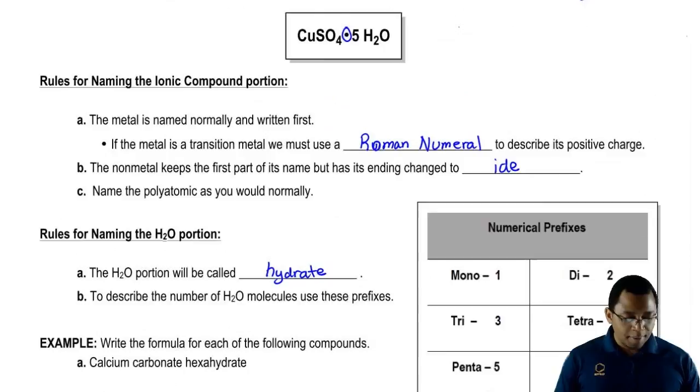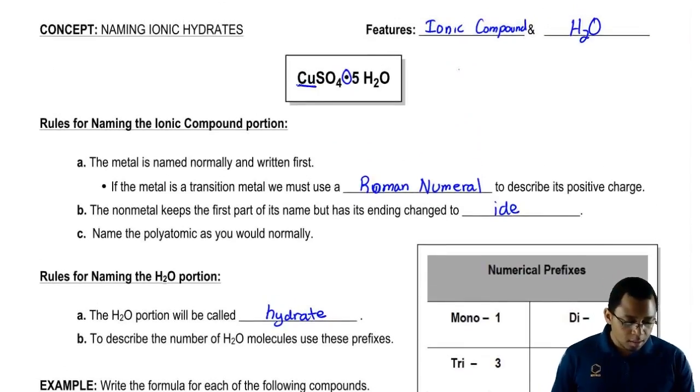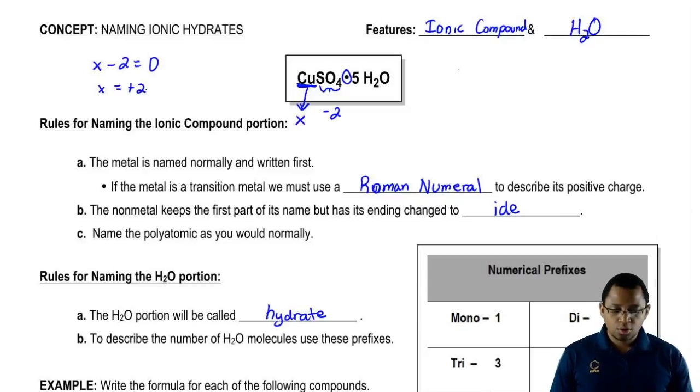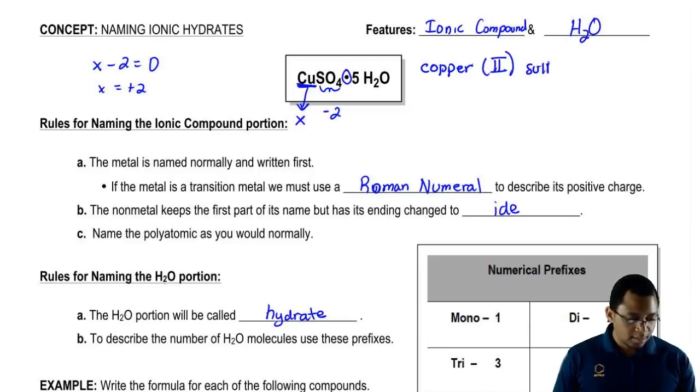Let's go back up to that first compound that we saw. Remember that copper is a transition metal, so there's a possibility of it having more than one charge. What do we do when that happens? We just say that this is X. Then SO4 is a polyatomic ion. Remember that is sulfate. Sulfate has a negative 2 charge. So you have X minus 2 equals 0, so X equals plus 2. So the charge of that copper is plus 2, so its name would be copper 2 sulfate. That's how we name the ionic portion.